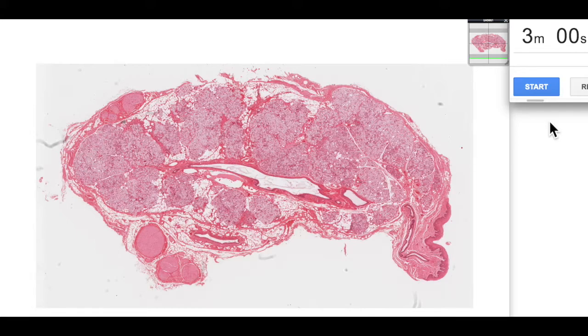Here we're going to have a look at the sublingual though. So let's start our three minutes. Like the other paired salivary glands, the sublingual salivary gland is encased within a dense irregular connective tissue capsule, and that capsule throws in some septa, connective tissue septa, which divides the gland into lobules.